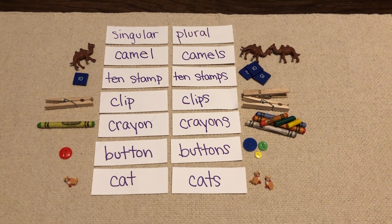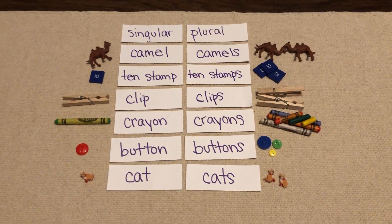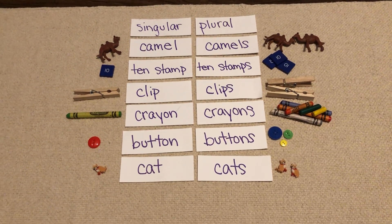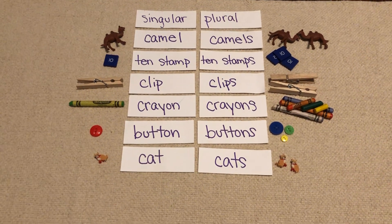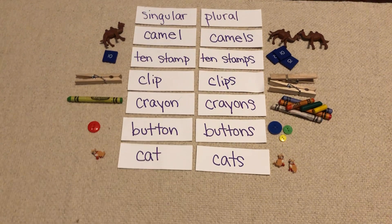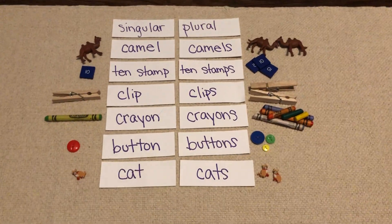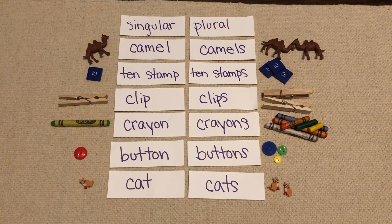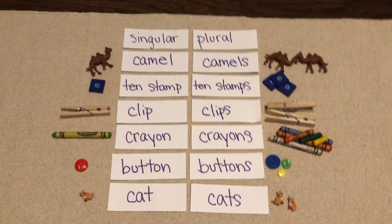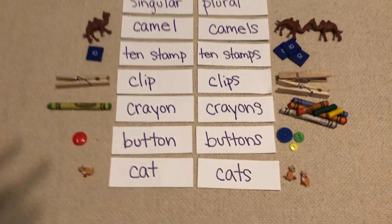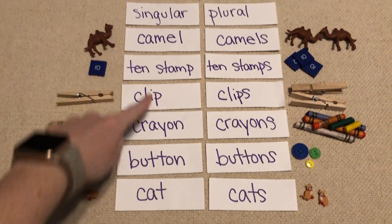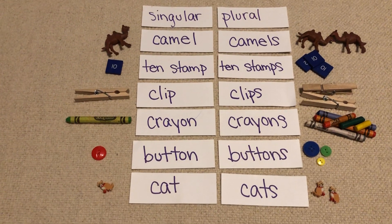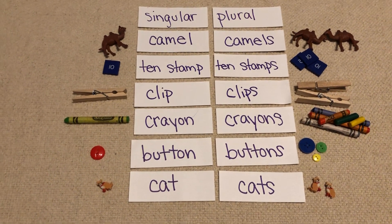Hey guys! Today I want to do a lesson reviewing singular versus plural. So I have some objects here and I have two columns — a singular column on the left and a plural column on the right. So here in my singular column, which if you remember, singular means one of something.